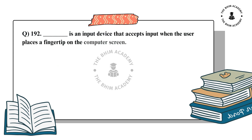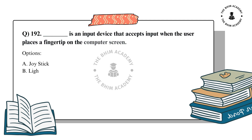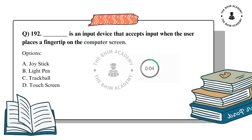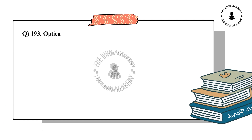Question number 192. Dash is an input device that accepts input when the user places a fingertip on the computer screen. The options are: A. Joystick, B. Light pen, C. A trackball, D. Touchscreen. The correct answer is D. Touchscreen.